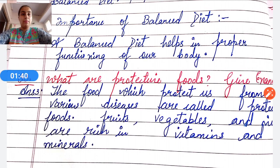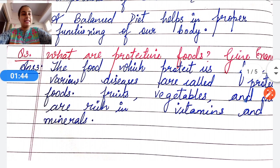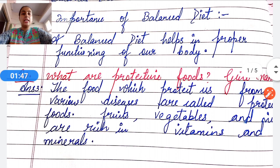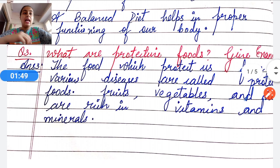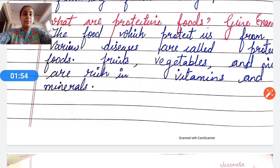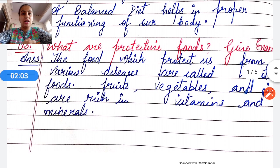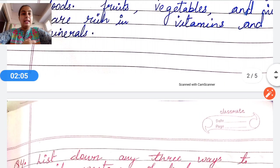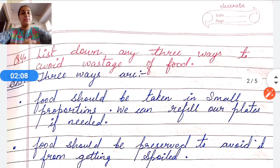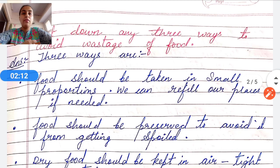Question number three: What are protective foods? Give examples. The foods which protect us from various diseases are called protective foods. Examples: fruits and vegetables are rich in vitamins and minerals, and they are termed as protective foods.